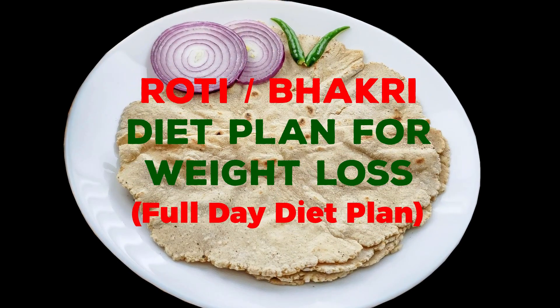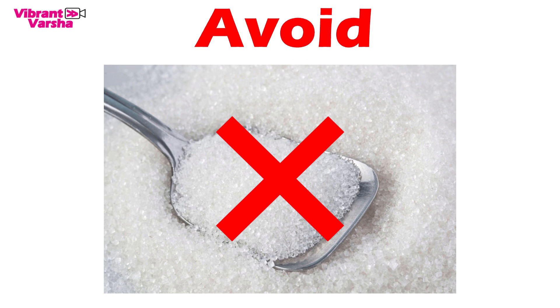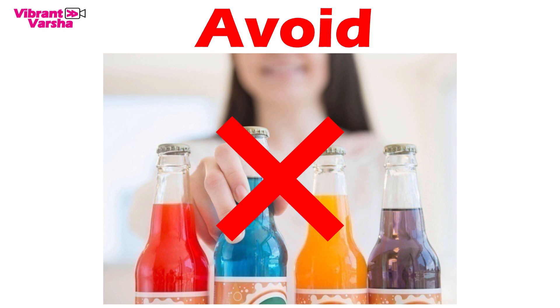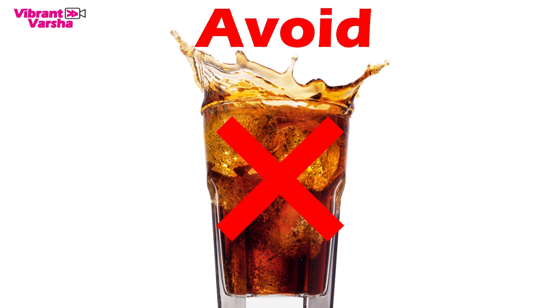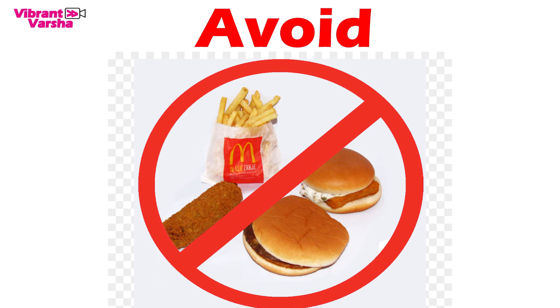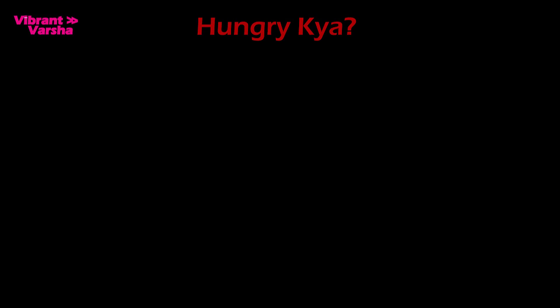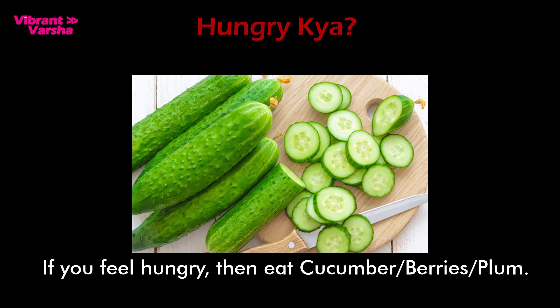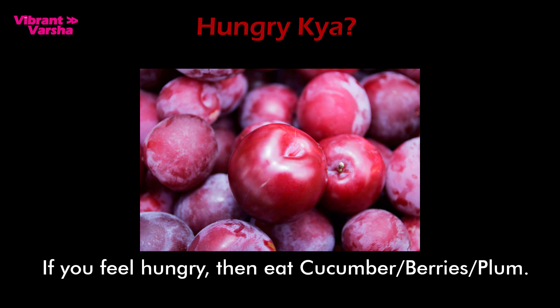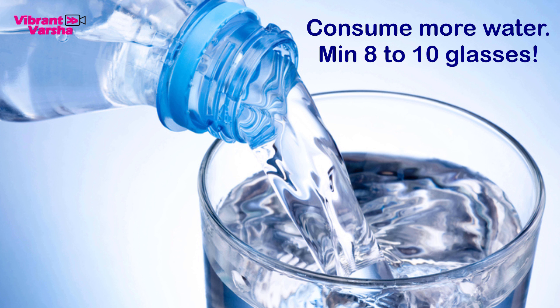This is a Bhakri diet. When you follow this diet, you have to focus on some things. You don't have sugar in any form. You don't have any processed, canned, or junk food. If you crave something sweet, then prefer cucumber, berries, or lemon. Water intake is important — minimum 8 to 10 glasses of water.